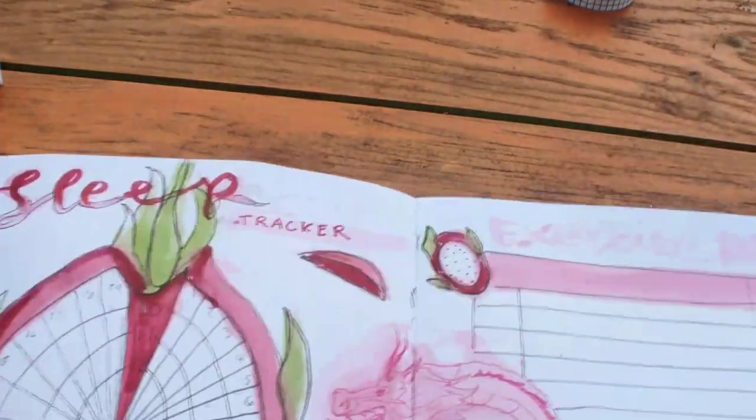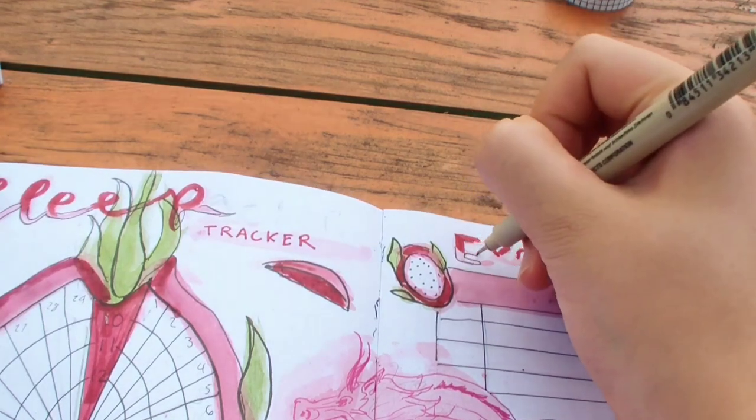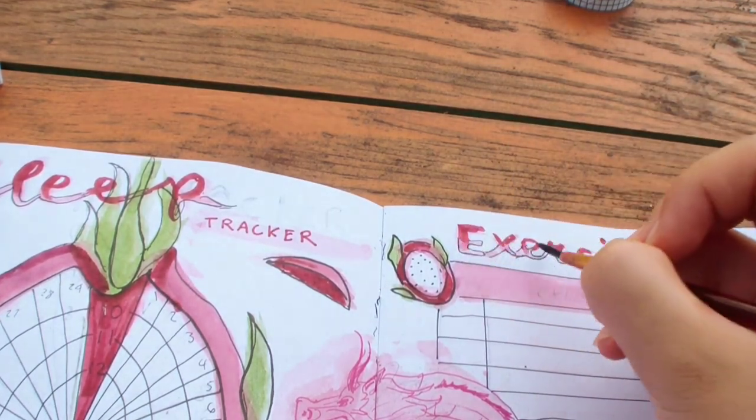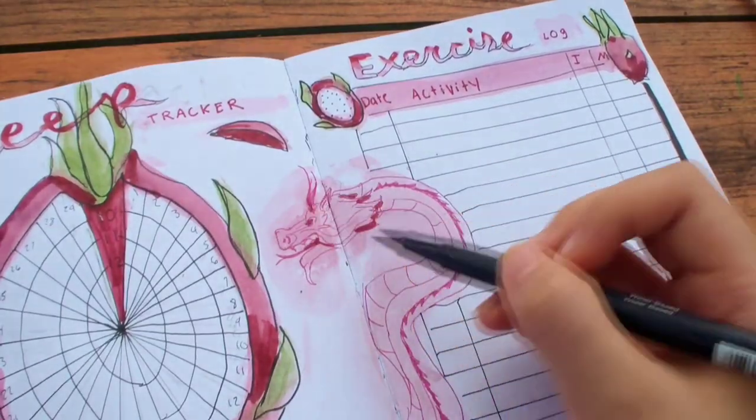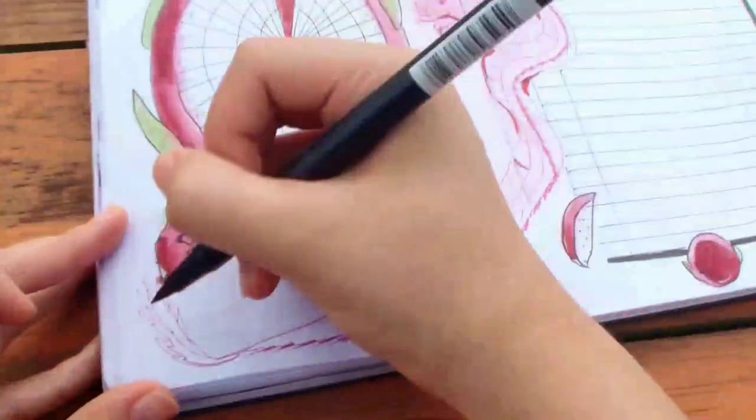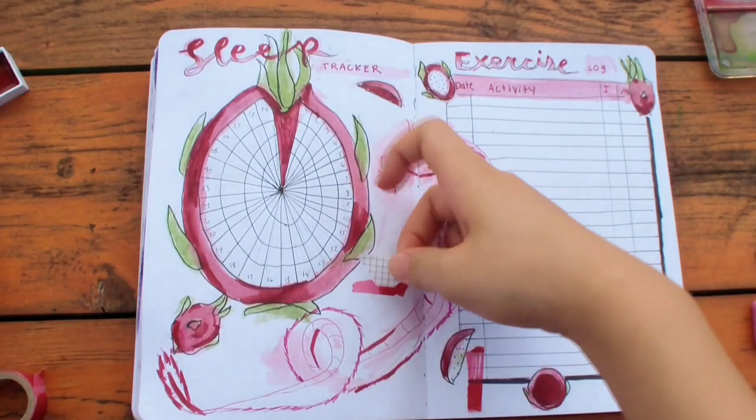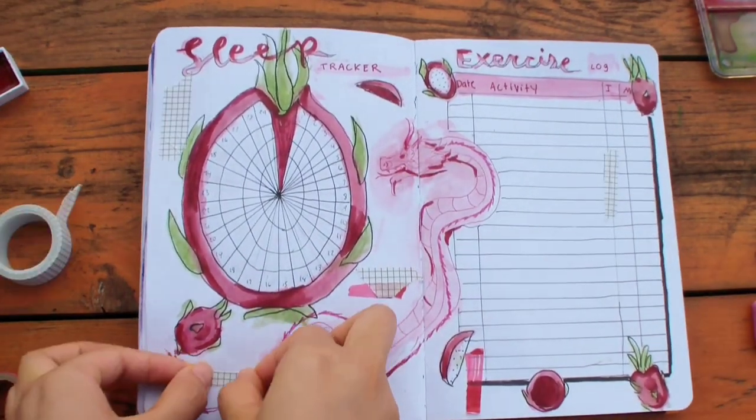I also wrote the word tracker and log in a smaller box. I decided to use my markers on the dragon to add some more color. I'm going to put some pink washi tape and some grid washi tape to finish it off. And those are the two finished spreads.